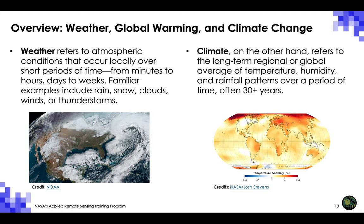Climate can help describe whether the summers are hot and humid, and whether the winters are cold and snowy at a particular place. Observers and automated stations measure weather conditions at thousands of locations every day of the year. Over time, these weather observations allow us to quantify long-term average conditions which provide insight into an area's climate. In many locations, systematic weather records have been kept for over a century, allowing us to detect patterns and trends.